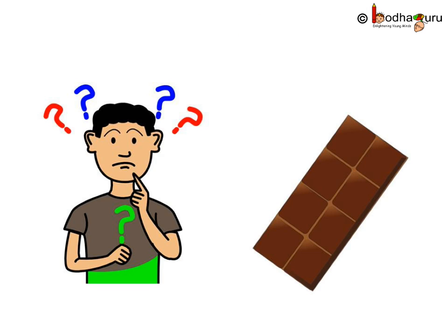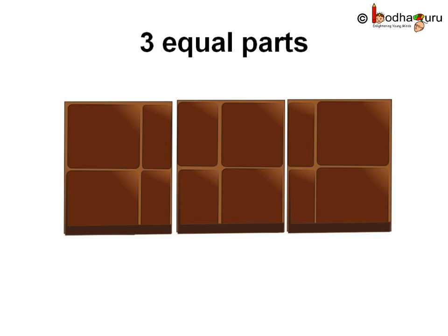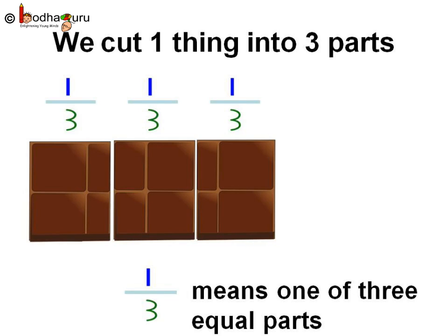Now, what if there were three children to share the chocolate bar? No problem, we can cut it into three equal parts like this. Here all three parts are equal. When three parts are of the same size, we call the equal parts thirds. We write it as one by three, as one is cut into three equal parts.